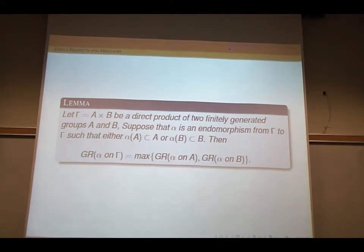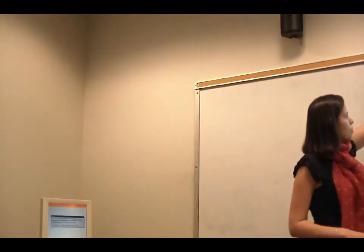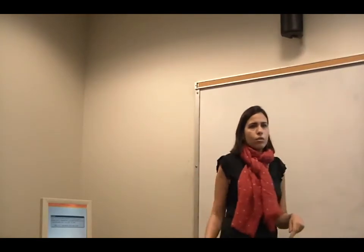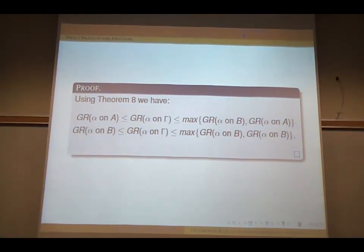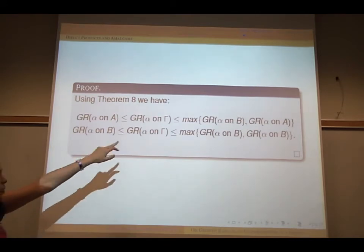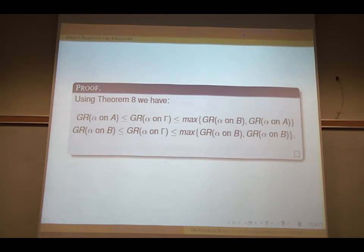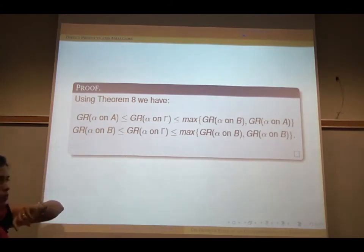Suppose gamma is the direct product of A and B, two finitely generated groups, and alpha is an endomorphism of gamma to itself. You need two conditions: either alpha(A) is a subset of A, or alpha(B) is a subset of B. Then the growth rate on the whole group is the maximum of the growth rate on A and the growth rate on B. Since A and B are both normal, you can take the quotient, and the growth rate of the whole thing is less than or equal to the maximum growth rate on the group and the quotient. Taking the maximum of these two, equality holds.